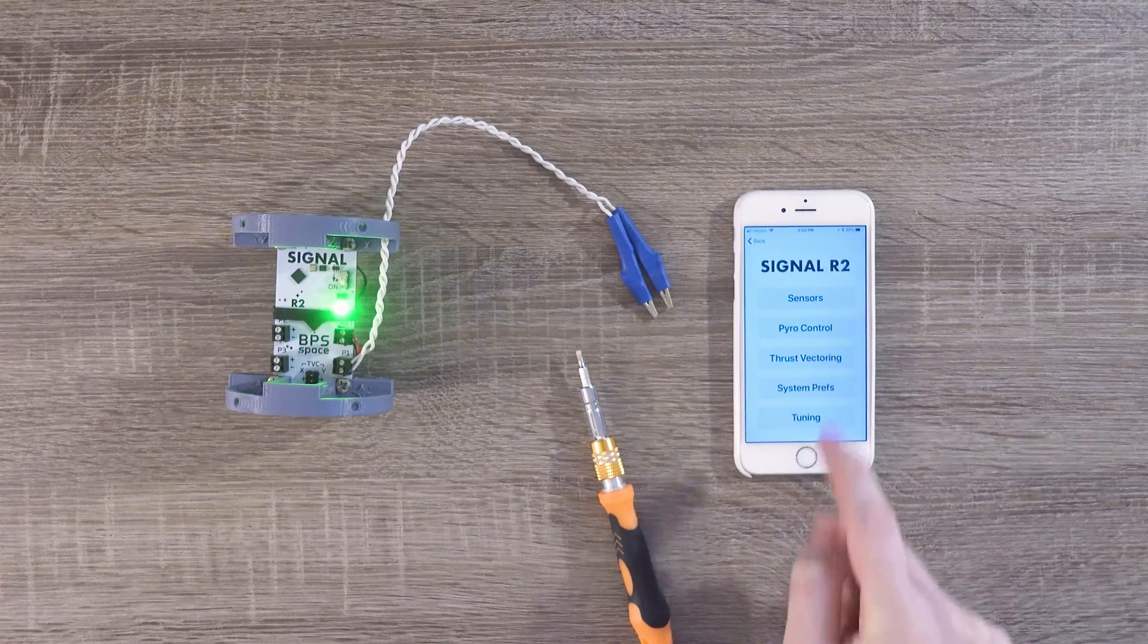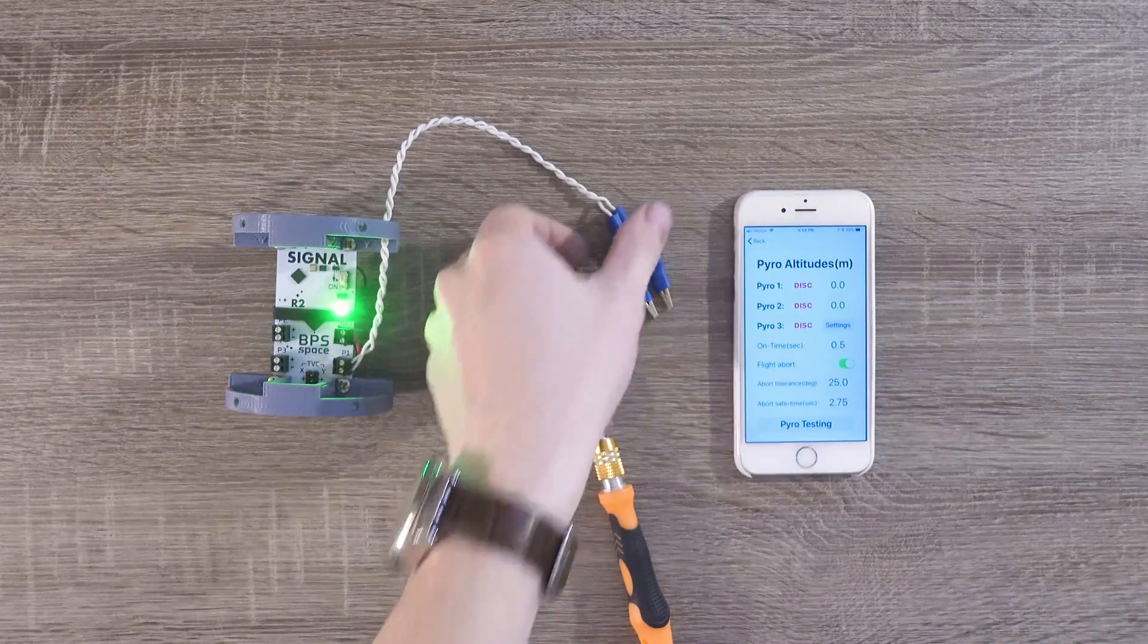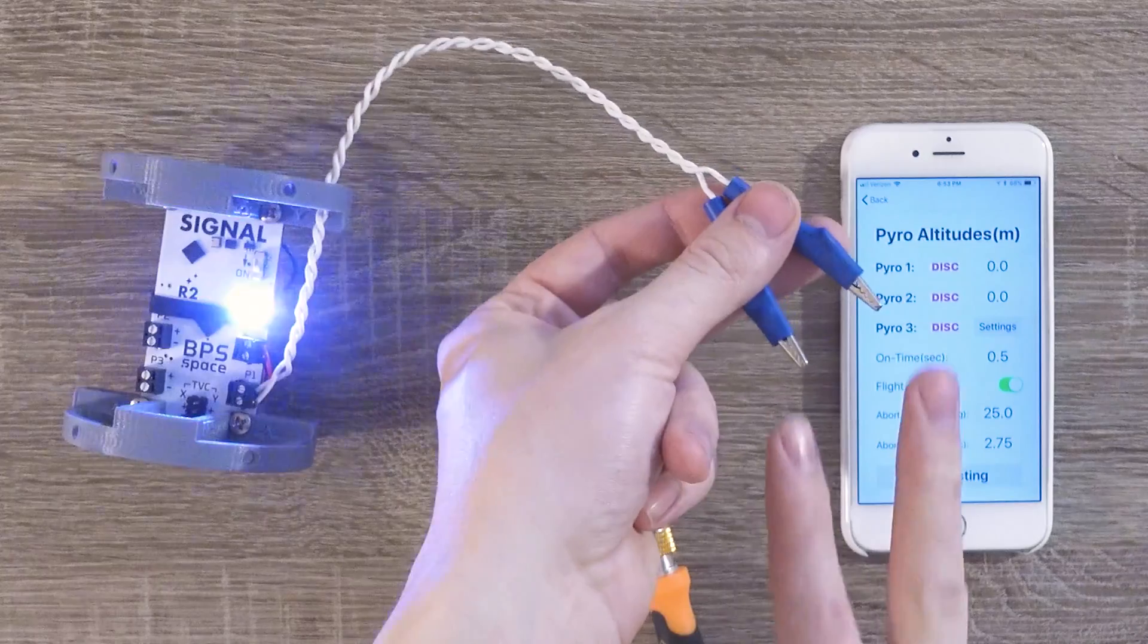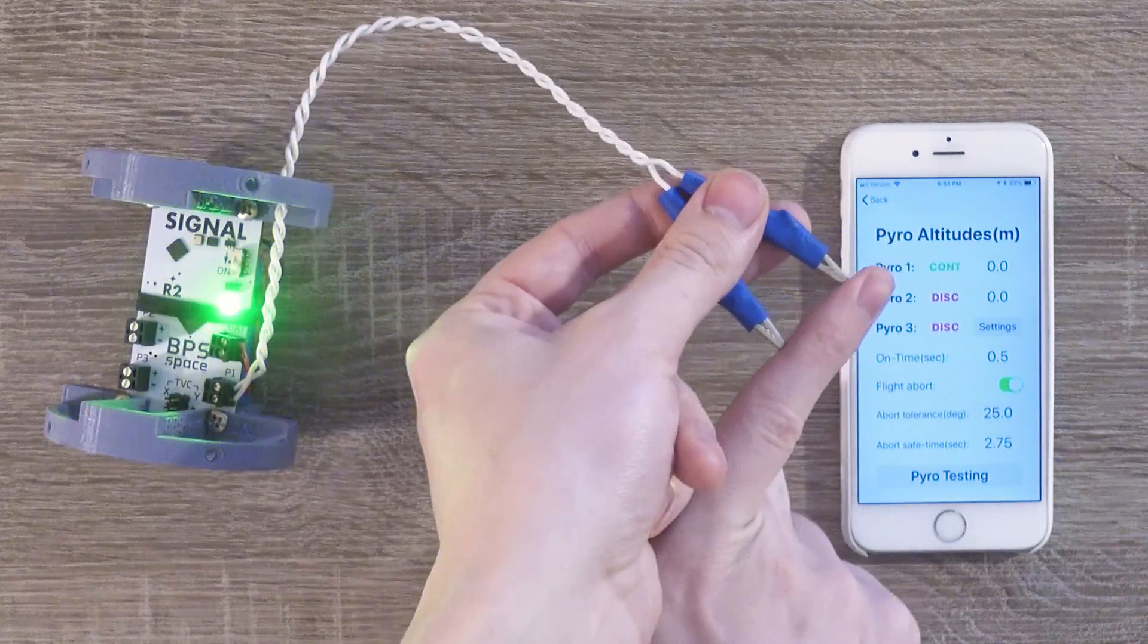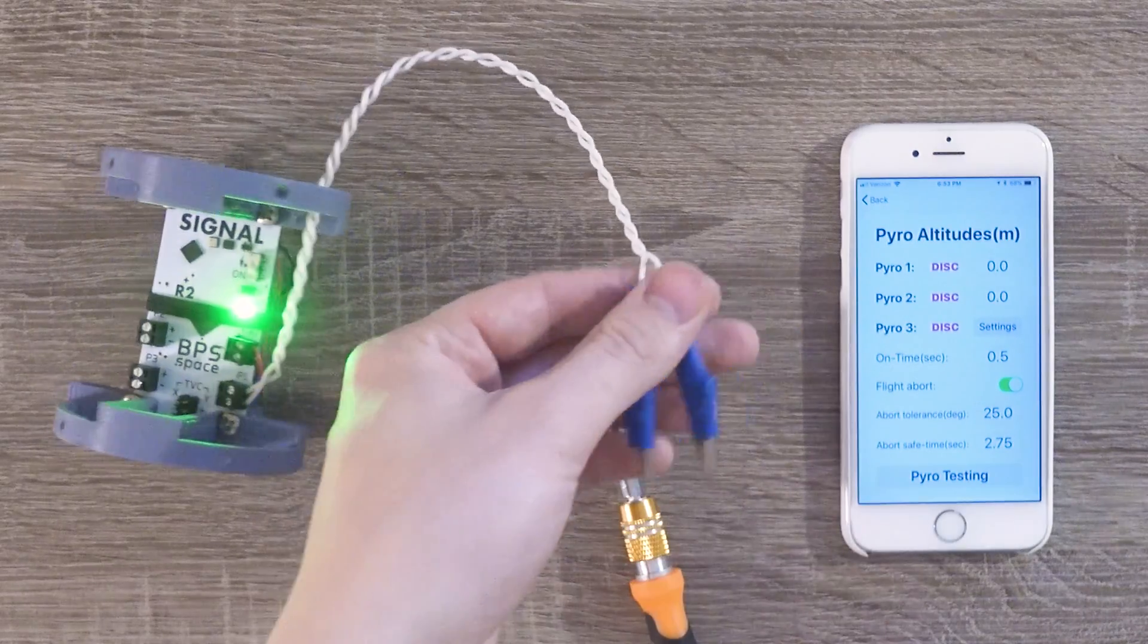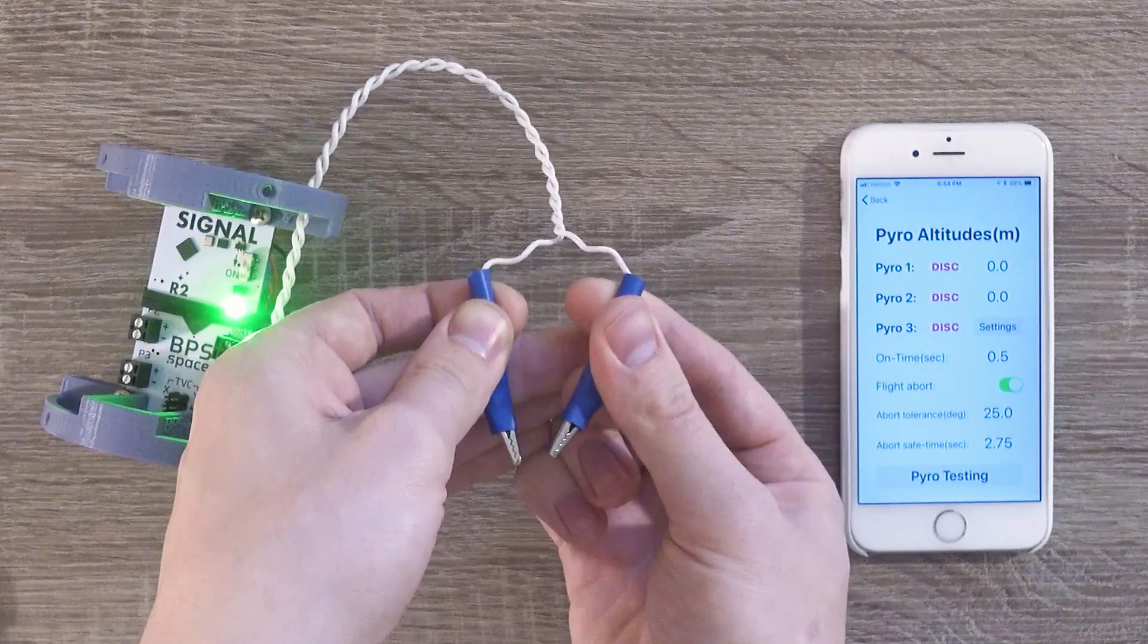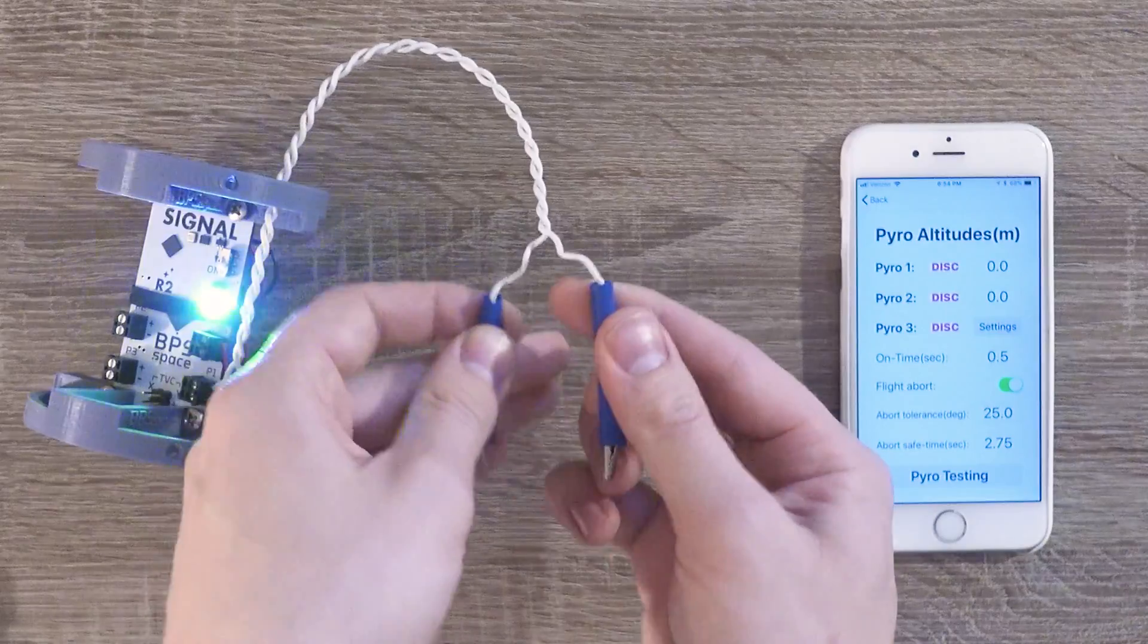Now we'll tap on SignalR2, go into pyro control, and then look at the red letters that say DISC. When I put my finger across the leads, they say CONT, which means continuity. You can use this to verify whether something is connected to a pyrochannel before flight.